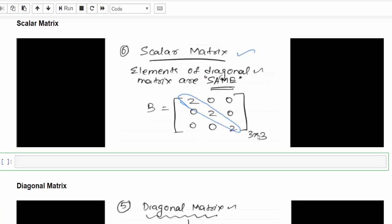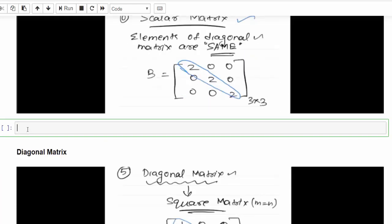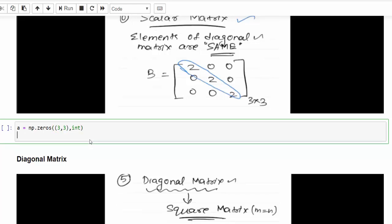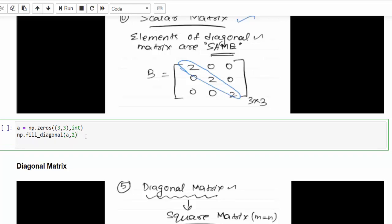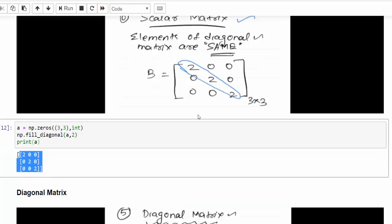Then scalar matrix. Scalar matrix means it is an identity matrix, but all the diagonal elements are same, other than one. Same way, we have to assign to a variable np.zeros and it should be of three cross three, comma int, since I want as an integer. Now what I am going to do, I want to fill that diagonal value with two. For that, np.fill_diagonal, inside that I am passing this matrix, comma, the value. In this matrix, the diagonal value will be filled with two. Run it, we got the expected output like above diagram.